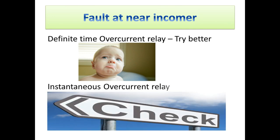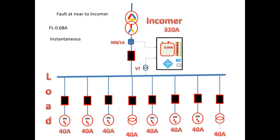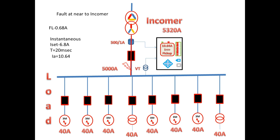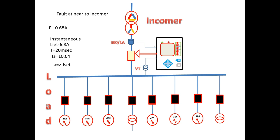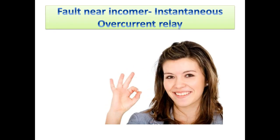For better protection I am going to check with instantaneous over current. For this I am going to keep ISET equal to 6.8A and trip time is 20ms, which is approximately 0 seconds. We consider the same sudden heavy fault occurring nearer to the incomer with a fault current of 5000A. The secondary current is also 10.64A, which is greater than ISET. The relay will pick up and trip instantaneously and the fault gets isolated. Here the instantaneous over current relay is much more suitable for this location.